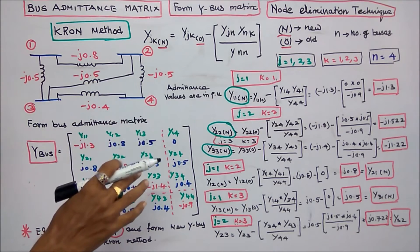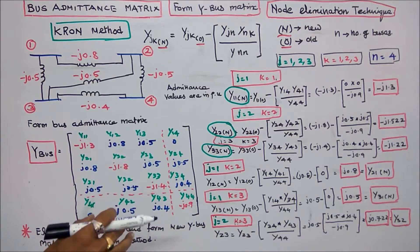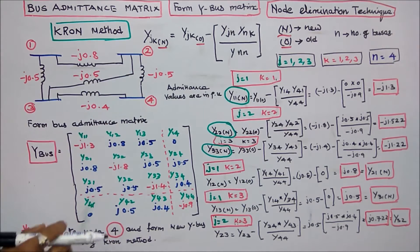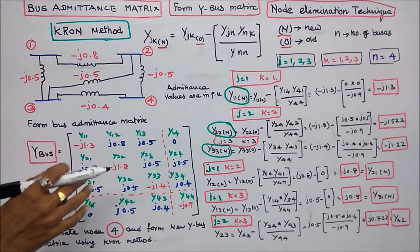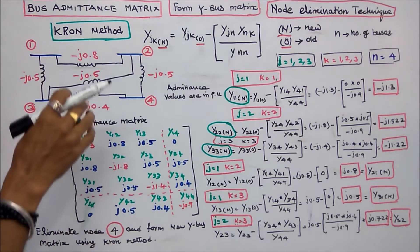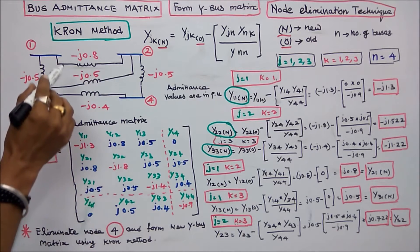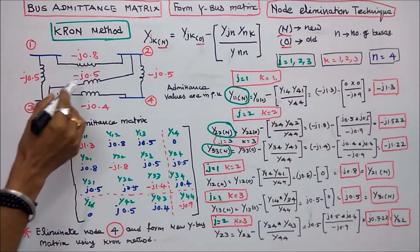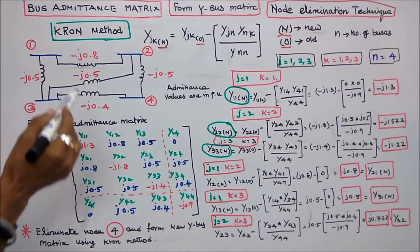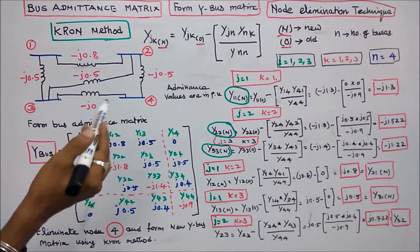In this class we work out one problem on bus admittance matrix. The question is: form the Y-bus matrix for the system. The system consists of 4 buses and 5 lines. The line admittance values are in per unit: minus j0.8, minus j0.5, minus j0.4, minus j0.5, minus j0.5. Since we have 5 lines and 4 buses, we get a 4×4 matrix.